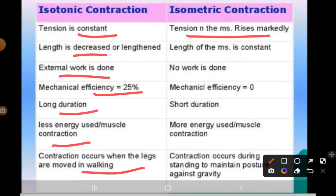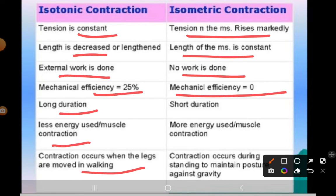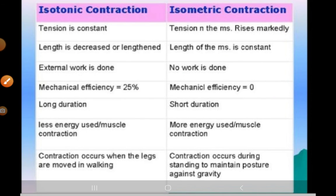In isometric contraction, tension in the muscle rises markedly while the length of the muscle remains constant. No work is done and mechanical efficiency is zero. Isometric contraction occurs for a short duration and more energy is used. Standing to maintain posture against gravity is an example of isometric contraction.